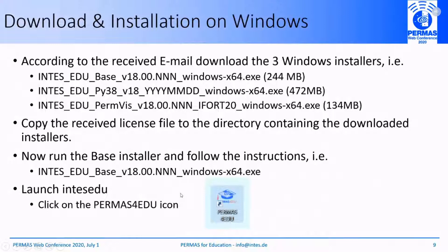The next point is the download and installation on Windows systems. Once you have registered and received an email, there are three different executables: the first is the base installer, the second contains the Python environment, and the last package contains executables for PERMAS and VISPA. You have to copy these executables to one directory, and the received license file should be present in the same directory — it will be automatically detected when you install the software. After running the base installer, you are ready to launch VISPA, and you will have an icon on your desktop to launch the PERMAS control center.